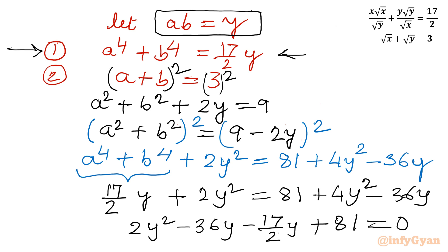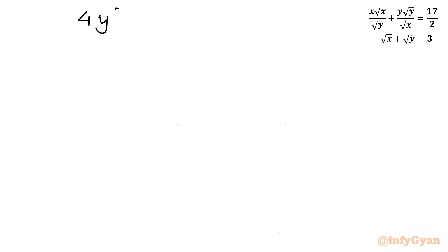This gives us one quadratic equation. Let us simplify: combining −36y and −(17/2)y. Multiplying the entire equation by 2 to clear fractions, we obtain: 4y² − 89y + 162 = 0.